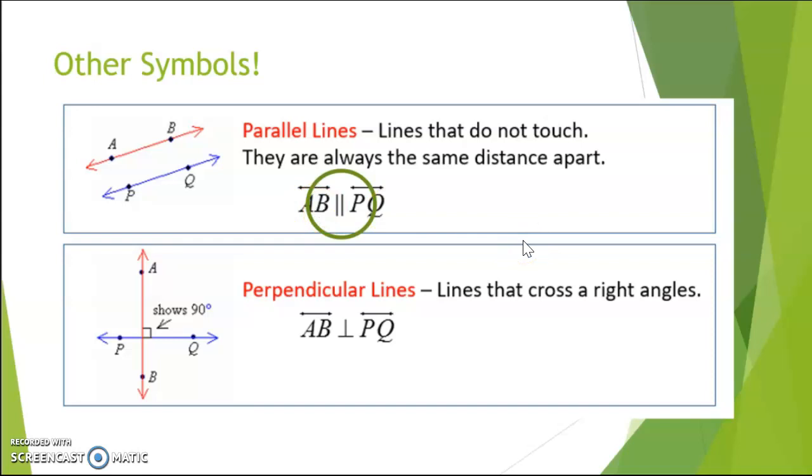And then perpendicular lines, there's our symbol for perpendicular. It is kind of like an upside down T, but again, it's going to help you see that 90 degree angle intersection point with two lines crossing at right angles.